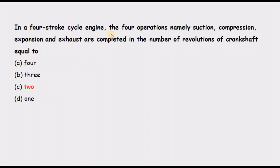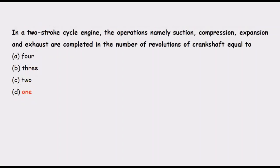In a four-stroke cycle engine, the four operations — suction, compression, expansion, and exhaust — are completed in how many revolutions of the crankshaft? The piston moves four times: down for suction, up for compression, down for expansion, and up for exhaust. For every two strokes the crankshaft rotates once, so four strokes require two revolutions. The correct answer is two revolutions of the crankshaft.